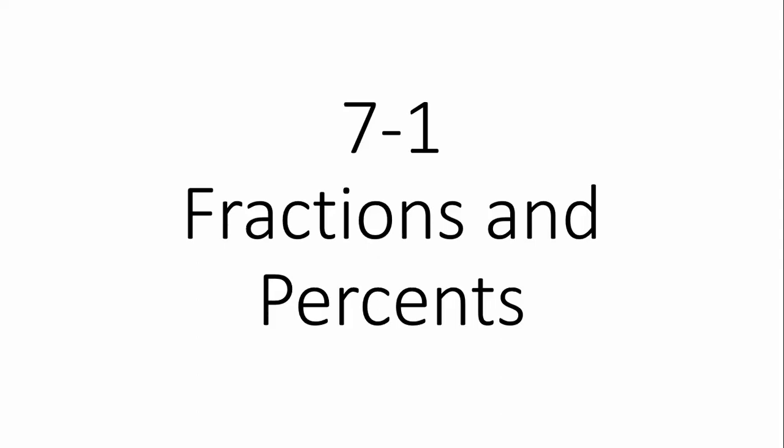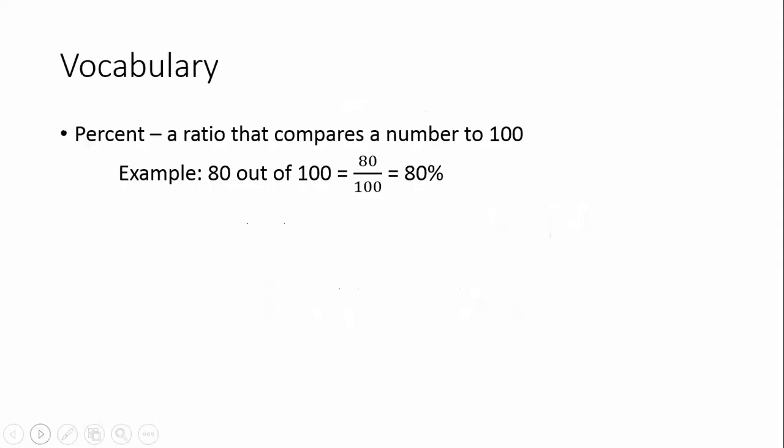The first section in Chapter 7 is titled Fractions and Percents. The vocab term for today is percent, and it's a ratio that compares a number to 100. So if we look at the example, 80 out of 100, we can write it as a fraction, 80 over 100, or it would be 80 percent.